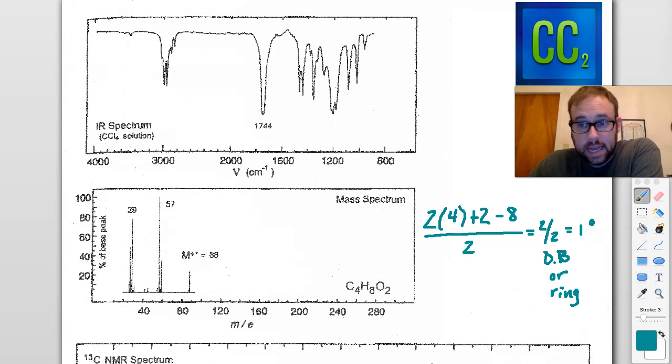Let's hop over into the mass spec and see if that has anything to tell us. So we can see the M plus peak at 88 means that the molar mass for this compound is 88 grams per mole. Now, we could have done that with an addition of all the elements down here.